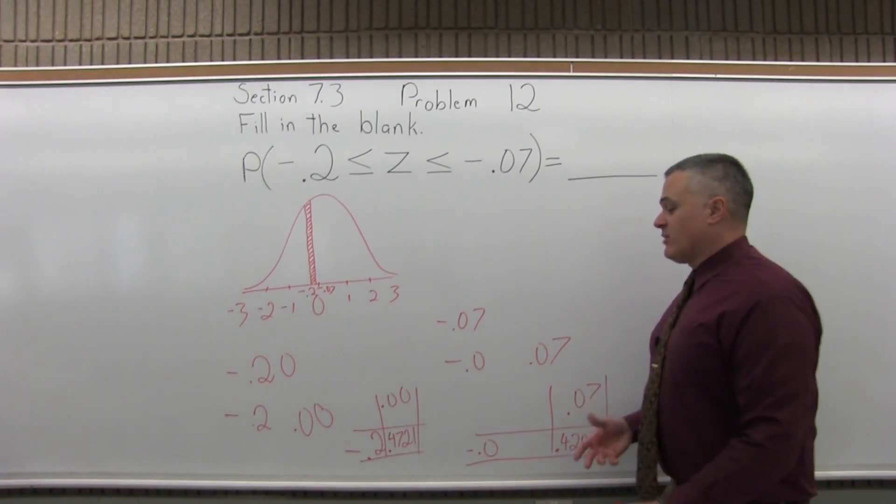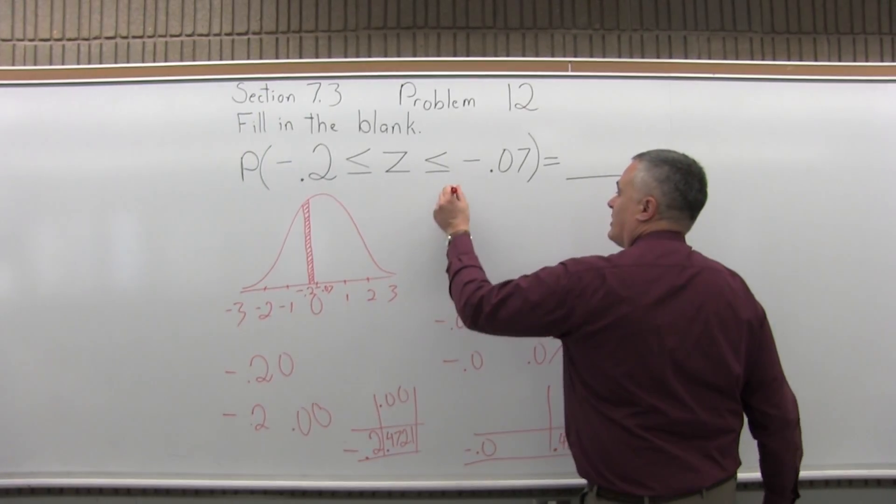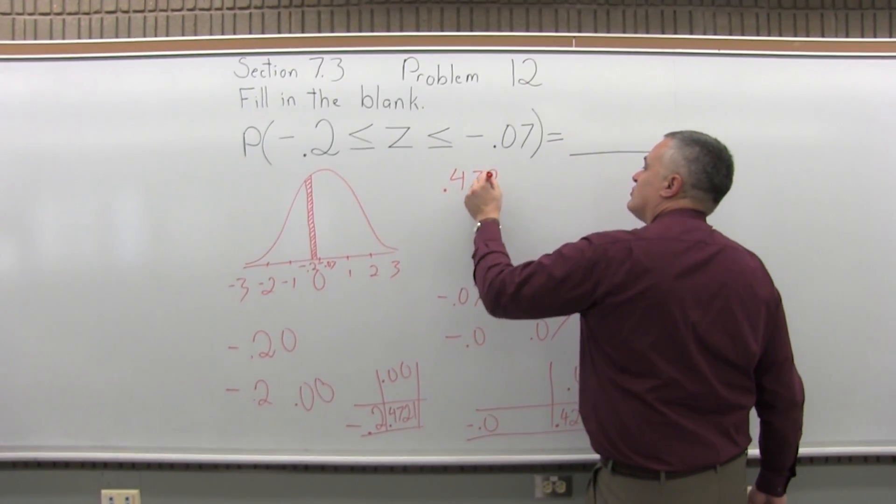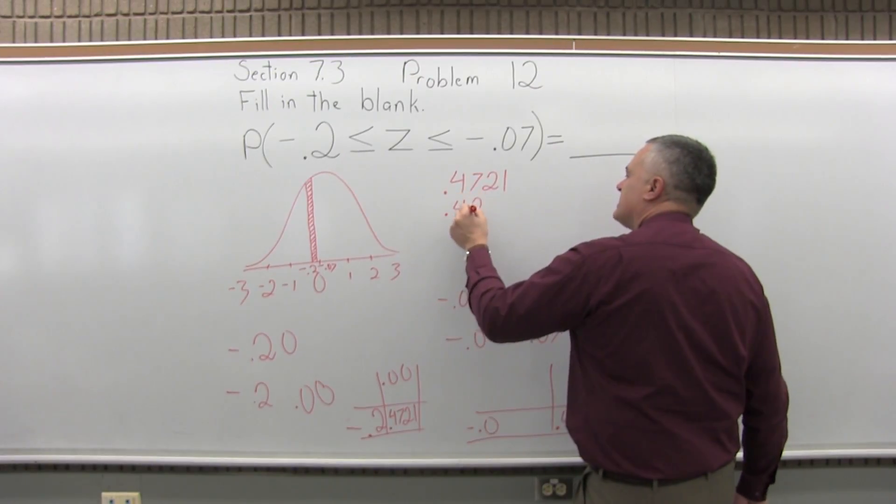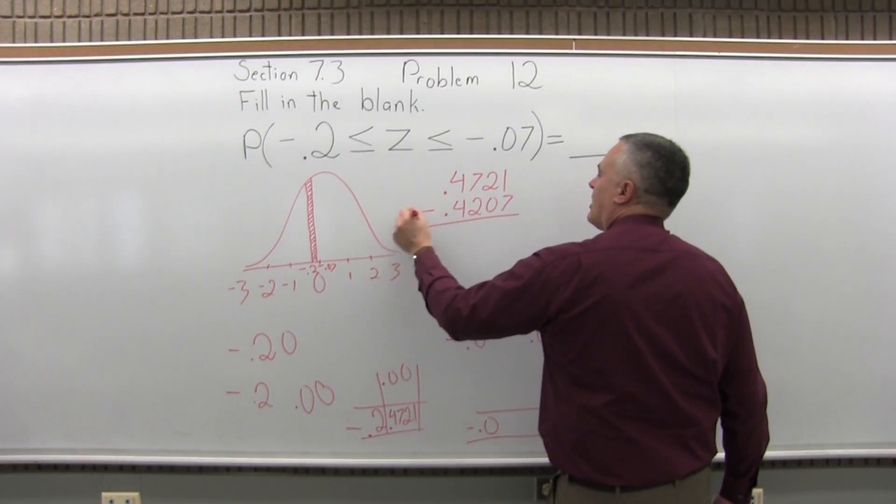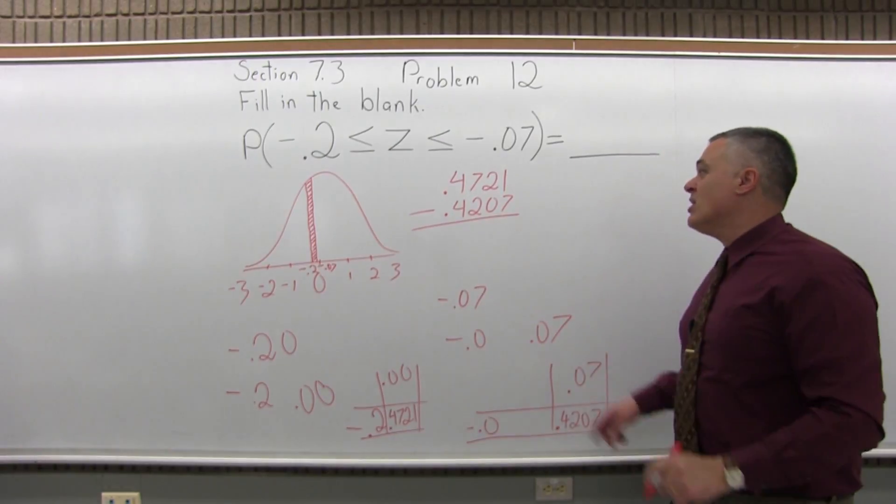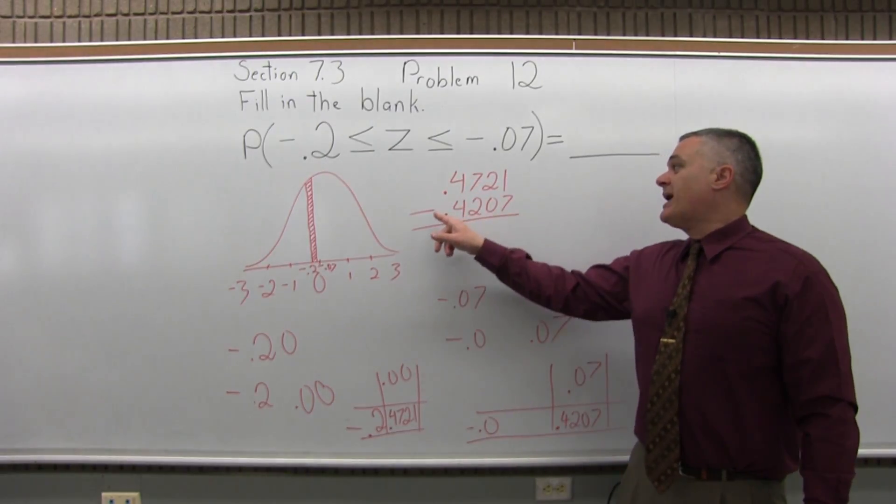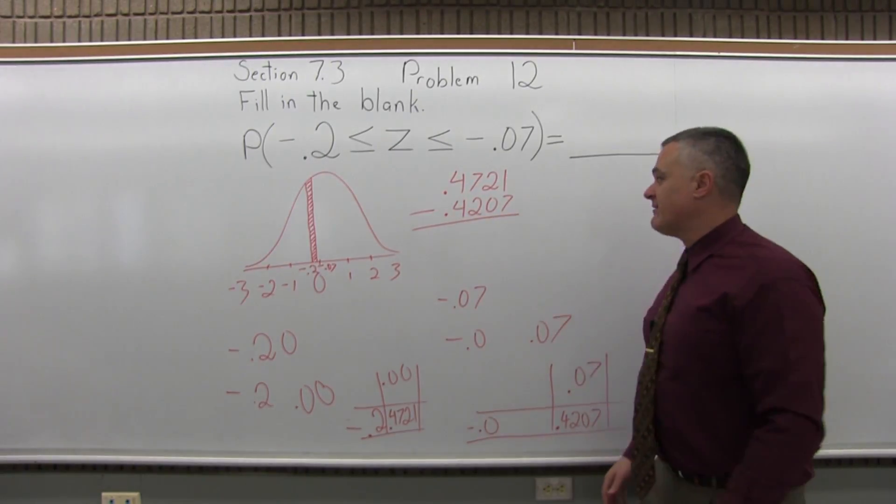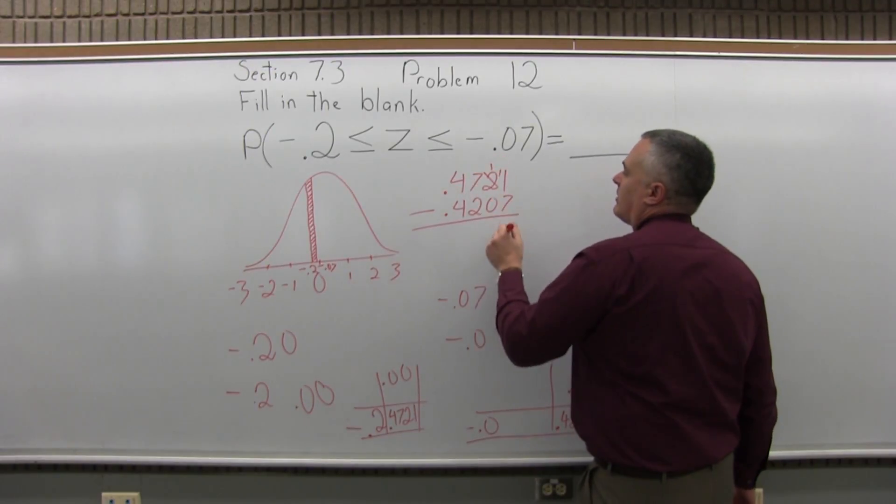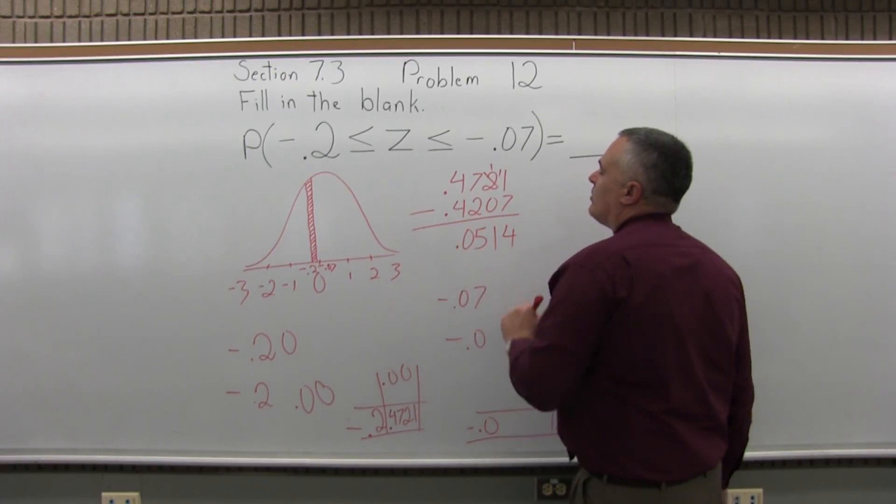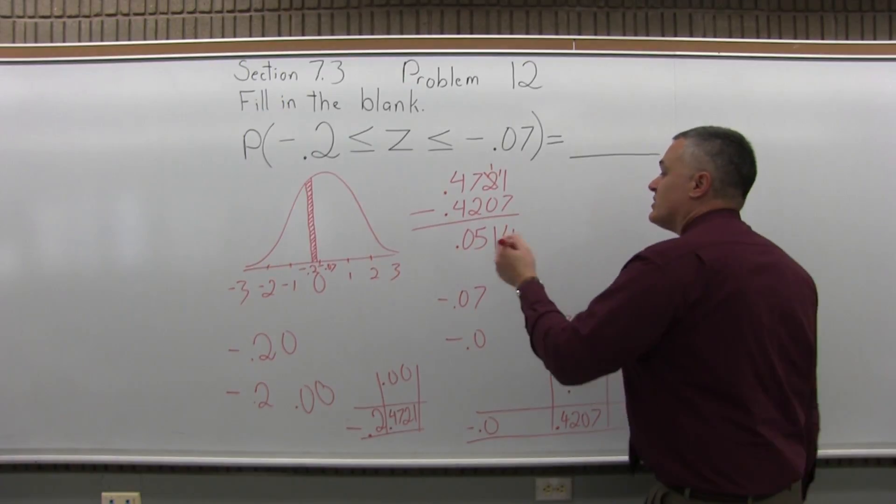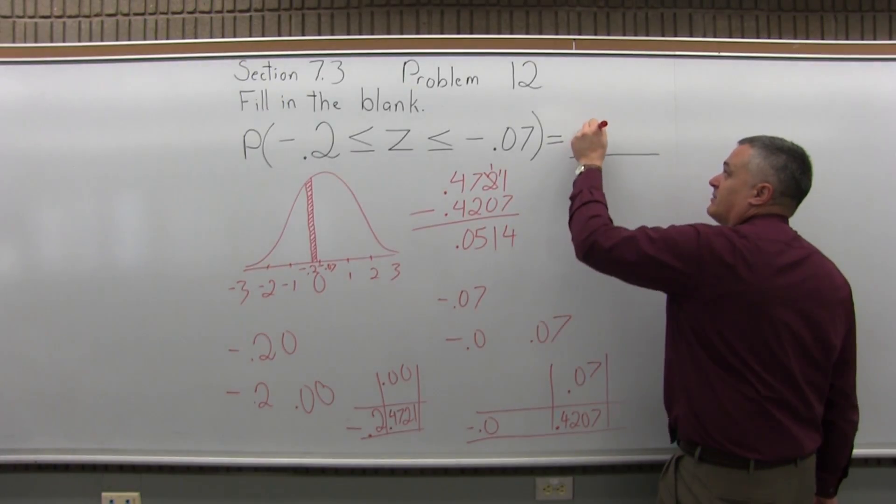Because this is an in-between question, I will subtract them. And you want to subtract in an order that gives you a positive result. The answer you're getting is a probability. Probability must be positive. You can never have a negative probability. So I will subtract 0.4721 minus 0.4207. So if you're doing this by hand, I'll borrow, it's going to be a 4, a 1, that'll be a 5, and 0.0514. So that's my answer. That's what fills in the blank.